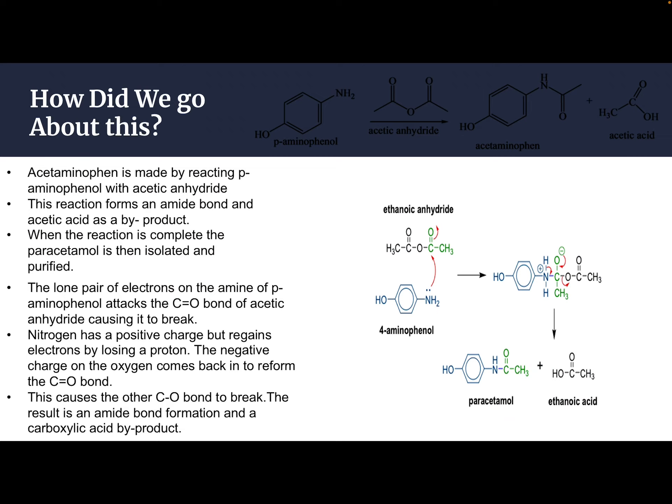Acetaminophen is made by reacting p-aminophenol with acetic anhydride. This reaction forms an amide bond and acetic acid (also called ethanoic acid) as a byproduct. When the reaction is complete, the paracetamol is isolated and purified. The mechanism: the lone pair of electrons on the amine of p-aminophenol attacks the C=O bond of acetic anhydride, causing it to break. Nitrogen gains a positive charge but regains electrons by losing a proton; the negative charge on the oxygen reforms the C=O bond, causing the other C–O single bond to break, resulting in amide bond formation and a carboxylic acid byproduct.